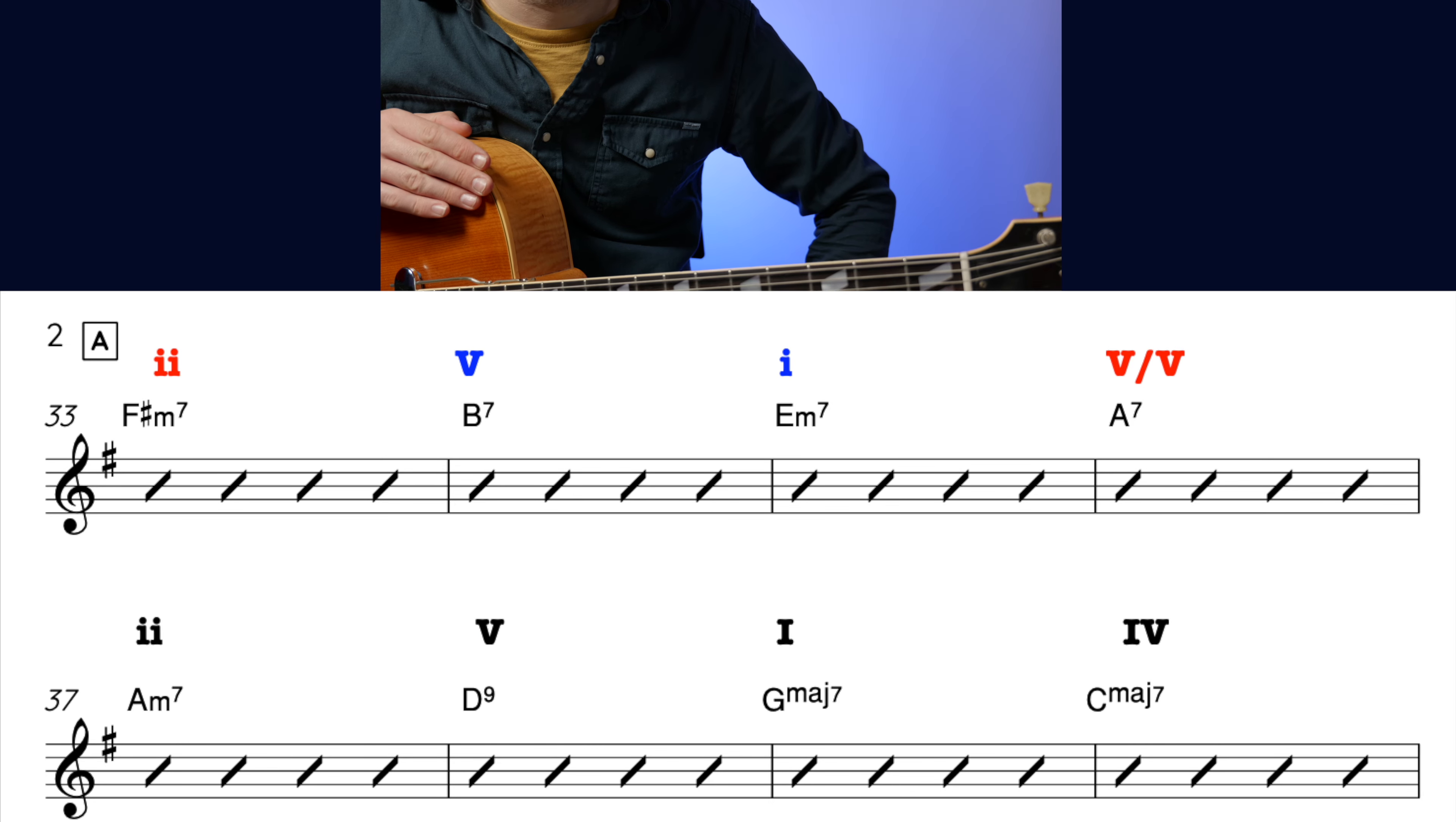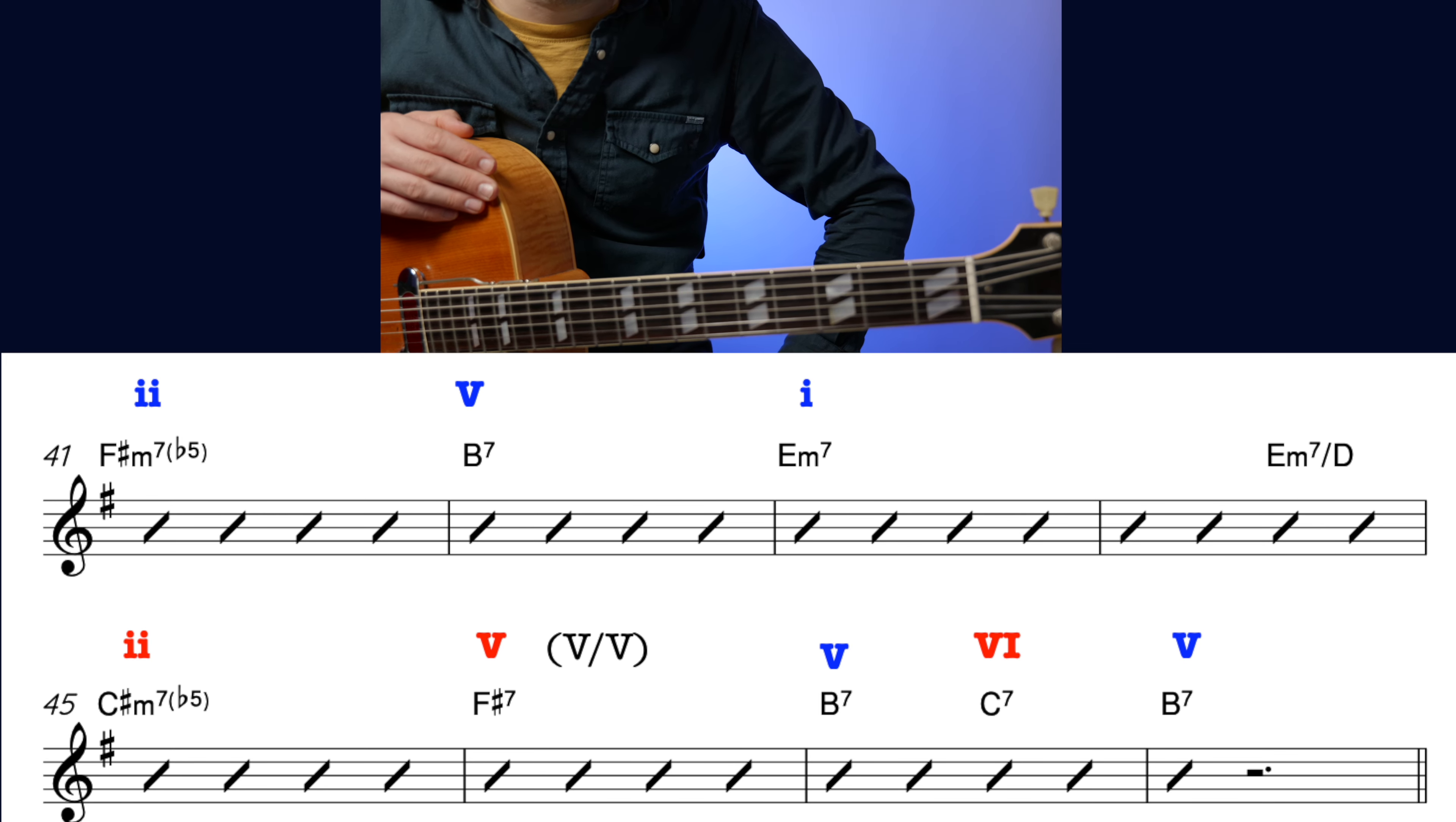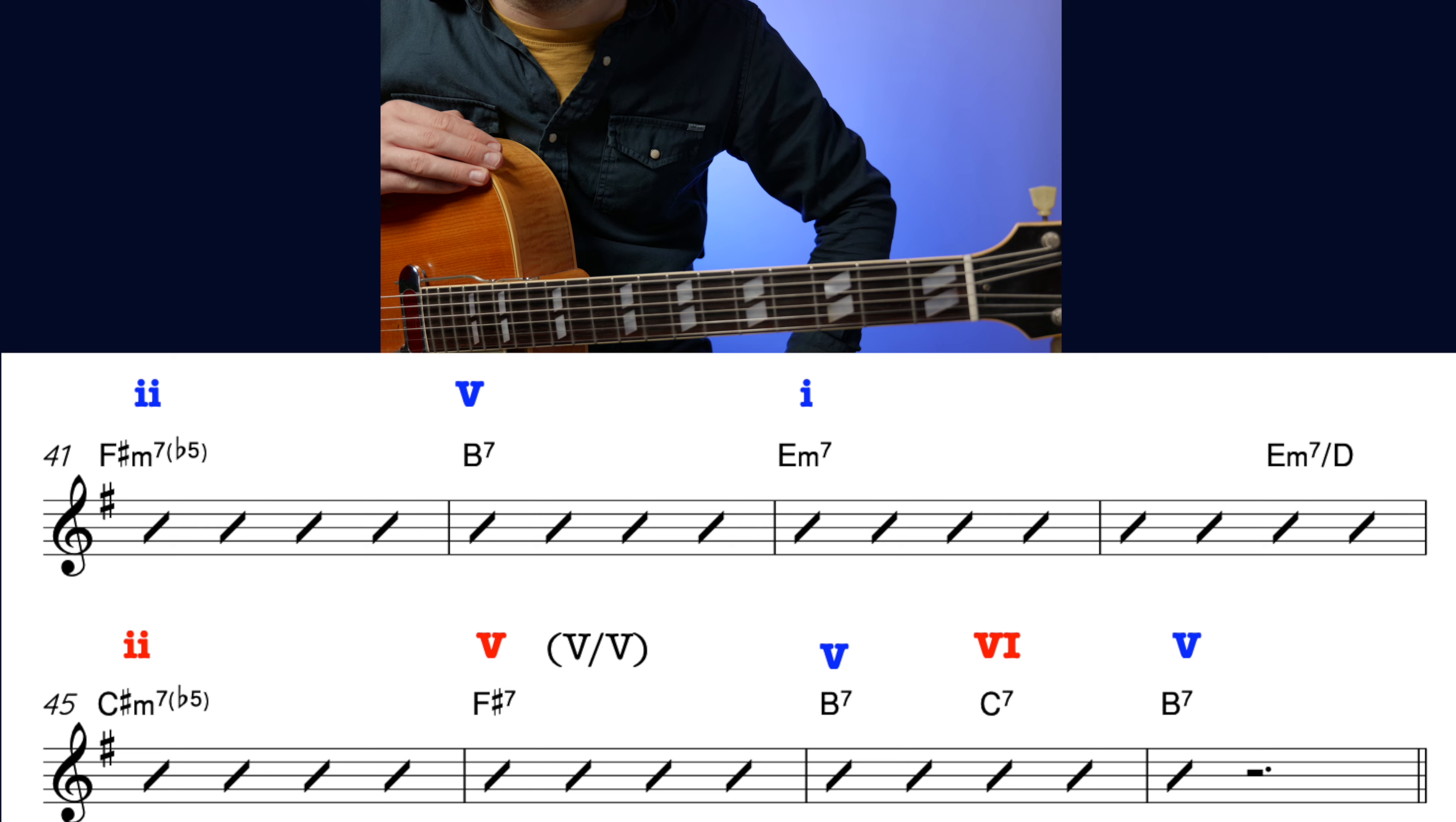So recap of the A section. We start in E minor in the first line. A7 sets up the movement towards that D9 chord, which leads us to the relative major, G major. Then we're flip-flopping back to E minor in the third line. Then we get a bit of out-of-key feel here, which I think helps create a bit of tension and interest, leading to that B7, which will help us start again in the B section.